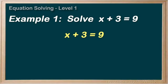At this point, we can see that the x isn't by itself. It's the plus 3 that's keeping it from being isolated. Thus, we have to get rid of that plus 3, and we can.